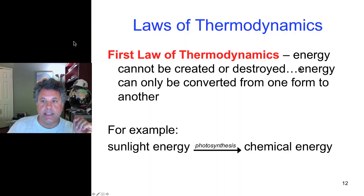So what that means is that energy cannot be created or destroyed. Energy can be converted from one form to another in the universe, but the total amount of energy remains the same in the universe. For example, sunlight energy is converted by photosynthesis to chemical energy, and the total amount of energy in that process is conserved even though we're transferring forms of energy.